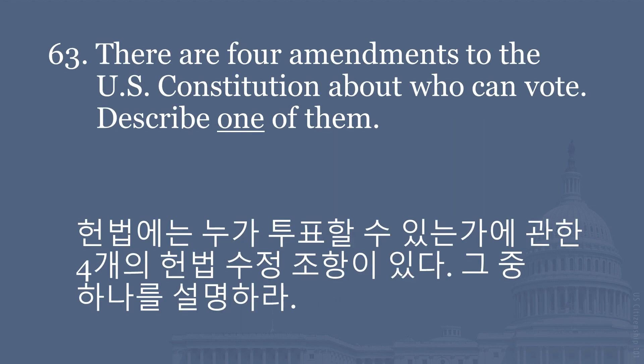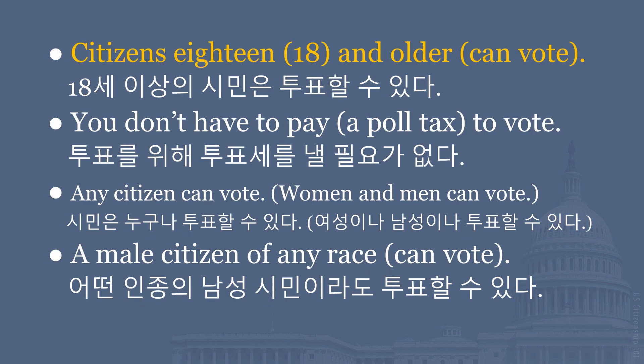There are four amendments to the U.S. Constitution about who can vote. Describe one of them. Citizens 18 and older can vote. You don't have to pay a poll tax to vote. Any citizen can vote — women and men can vote. A male citizen of any race can vote.